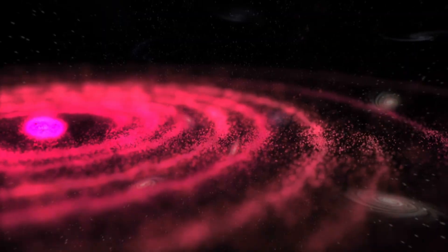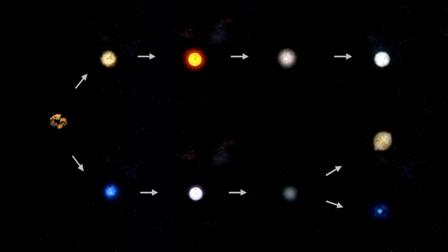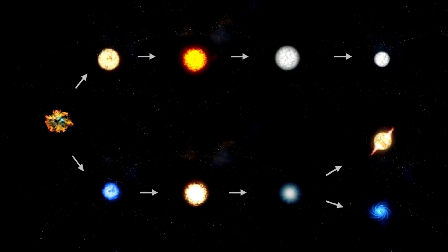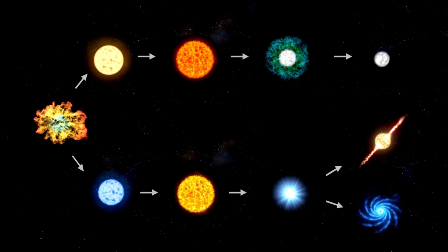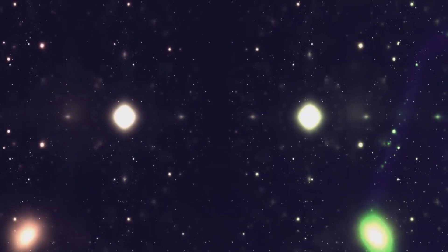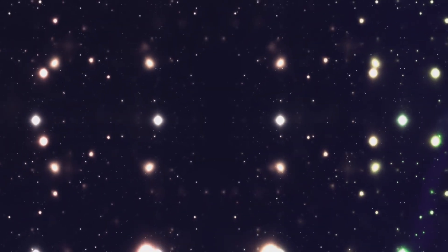Even light, which can circle the Earth seven times in a single second, seems relatively slow compared to the vastness of our solar system. And although our solar system is vast, it is dwarfed by the enormity of the Milky Way galaxy. The Milky Way contains approximately 300 billion stars, each of which likely has its own planetary systems.